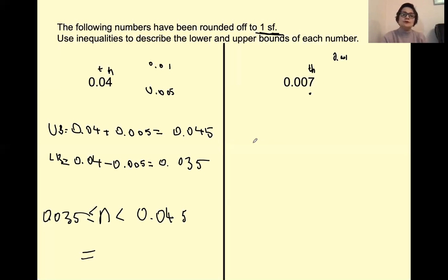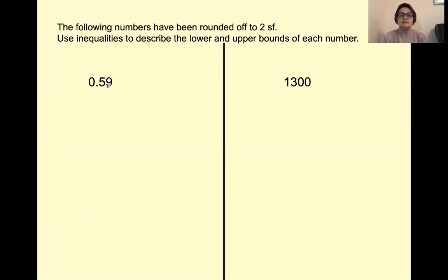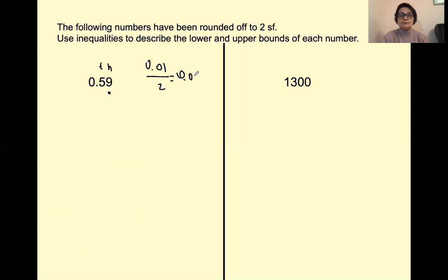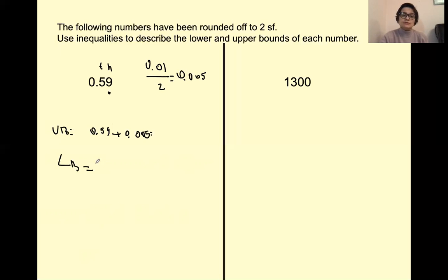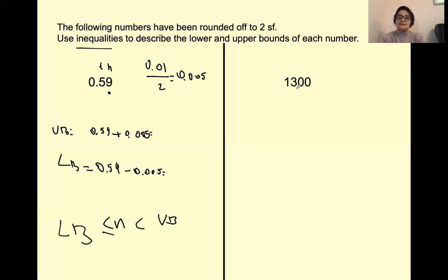For two significant figures, it's not the first but the second significant figure — place a little dot under the second significant figure. Identify the place value: digit nine — this is the tenths, so this is the hundredths — so it's going to be 0.01, halved to give 0.005. For the upper bound, you are going to do 0.59 plus 0.005, and work out the answer yourself. For the lower bound, it's 0.59 take away 0.005. Then use inequalities: numbers smaller than the upper bound and greater than or equal to the lower bound.